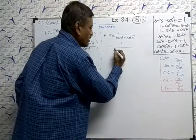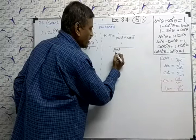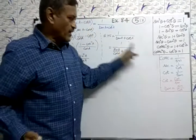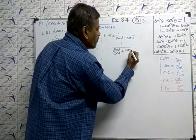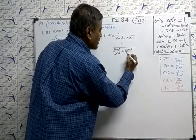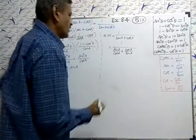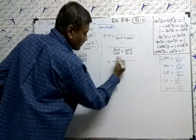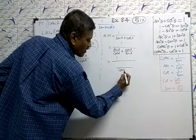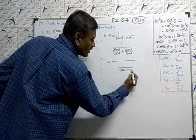So, sin A by cos A you can write. Sin A by cos A plus cot A. Cot A formula cos by sin. So, cos A by sin A. Again, I am going to take LCM. 1 by downside A is like this. Cos A into sin A.